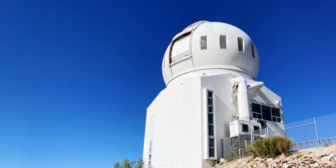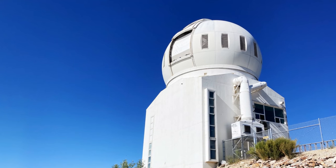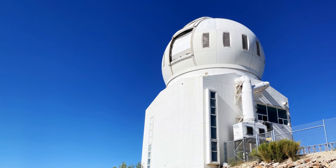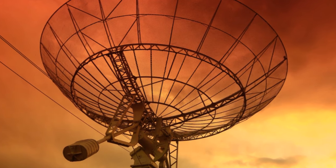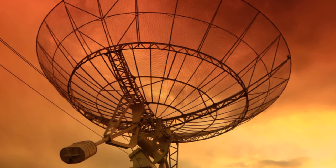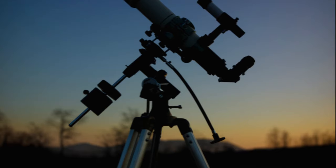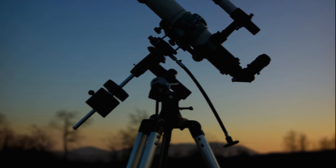This giant mirror isn't just one piece. It's made up of 18 hexagonal segments like a honeycomb. Each segment is coated with a thin layer of gold, and no, it's not for the bling. Gold is excellent at reflecting infrared light, which is exactly what the JWST is designed to detect.